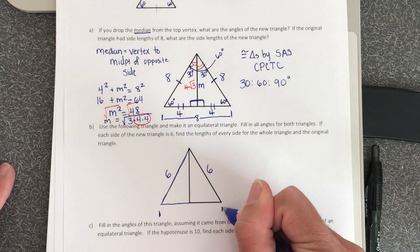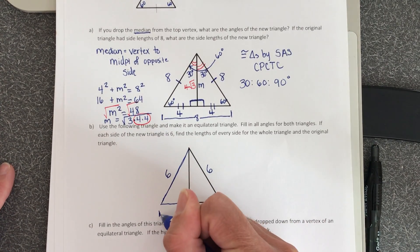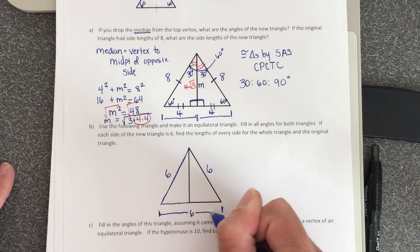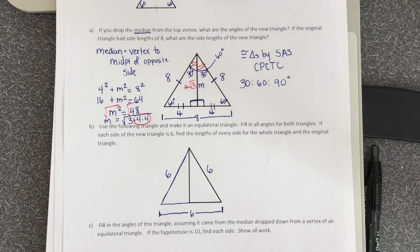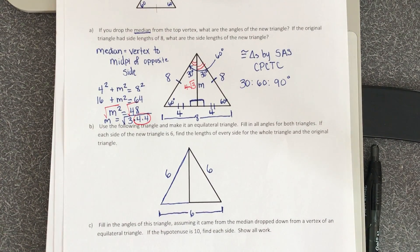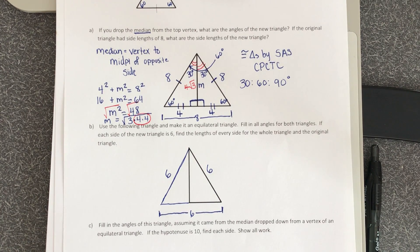Then this side length here is 6, and then from here to here is 6. So using what we just did above, finish the triangle. Find all of the missing sides and find all of the missing angles for the two triangles put together.